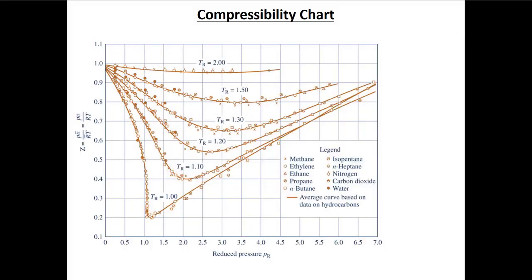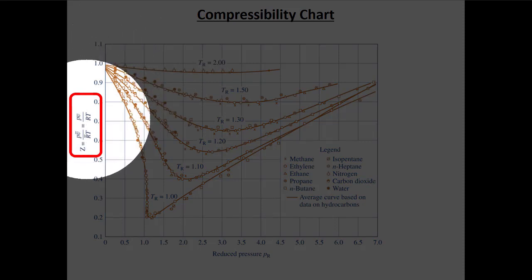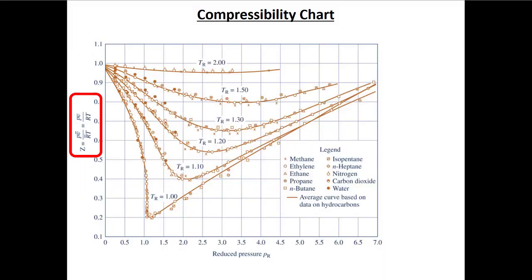All this data collapses — it doesn't matter what gas we're using — if we define the dimensionless parameters correctly. We can use the same equation to predict the behavior of all gases. On the vertical axis we have the compressibility factor: pressure times specific volume — where as mechanical engineers we define specific volume by mass — divided by the specific gas constant multiplied by absolute temperature. Any time temperature appears alone in an equation, not as a difference, your instinct should say to use absolute temperature.